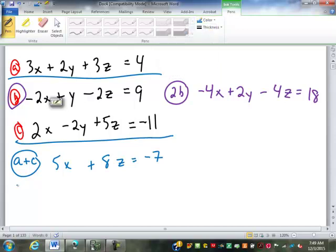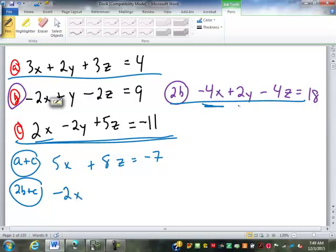So, now, I'm going to have 2B plus C. I'm going to add this to this. So, we've got negative 4X and 2X makes negative 2X. 2Y and negative 2Y is 0. It cancels out. Negative 4Z and 5Z is just 1Z, or just Z. 18 and negative 11 is 7.